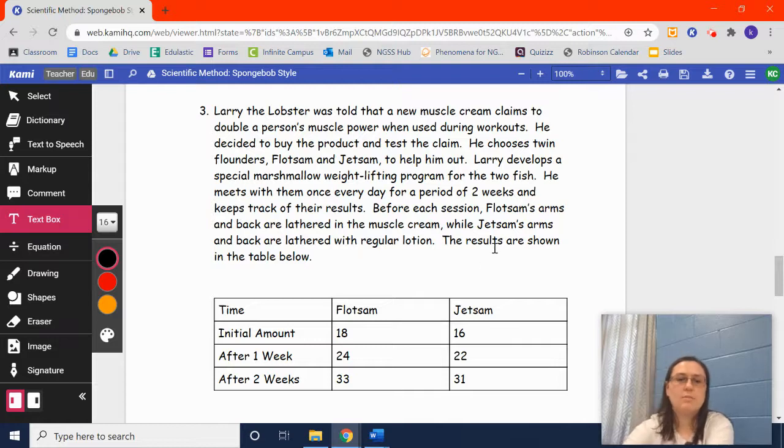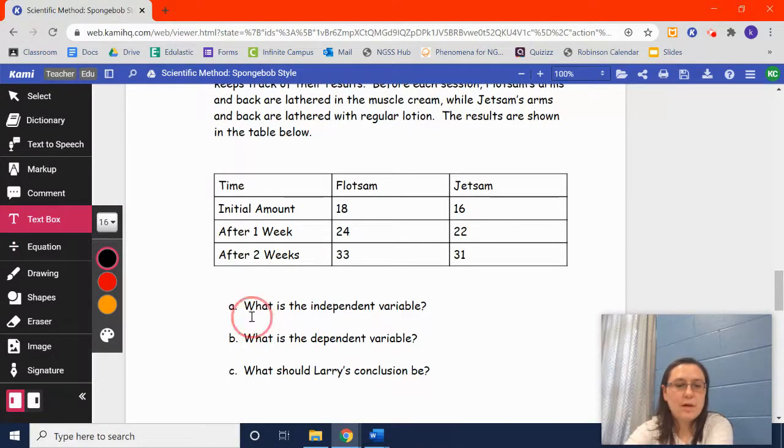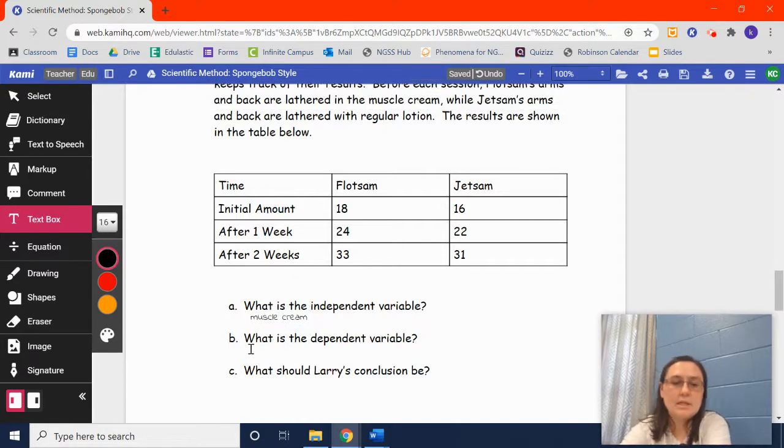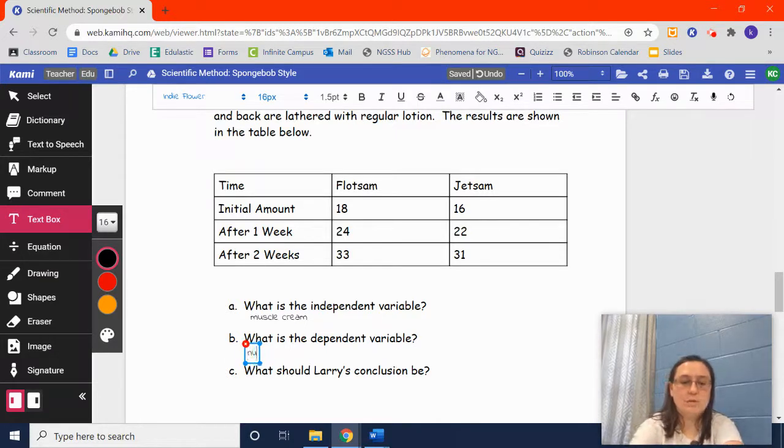So, Flotsam gets the muscle cream that's supposed to help increase muscle power, and Jetsam doesn't get that. So, when they start out, Flotsam can do 18 reps, Jetsam can do 16. After a week of the cream, Flotsam can do 24 reps. After a week of lotion, Jetsam can do 22. After two weeks, Flotsam is 33. He has the cream that's supposed to help, and Jetsam is up to 31. He does not have the cream. So, the independent variable is what I control and what I'm in control of, what I do, what I change. So, the difference between Flotsam and Jetsam is the muscle cream. Flotsam gets the muscle cream, Jetsam doesn't. The dependent variable is the results. So, what are we looking for at the end? That would be the number of reps. How much each person can lift.